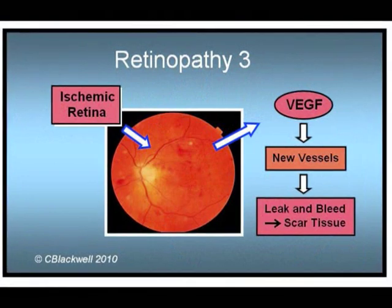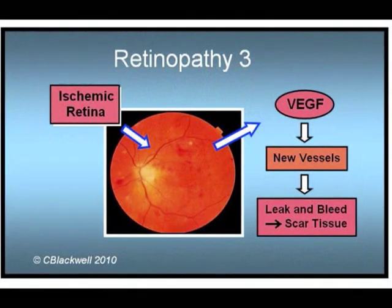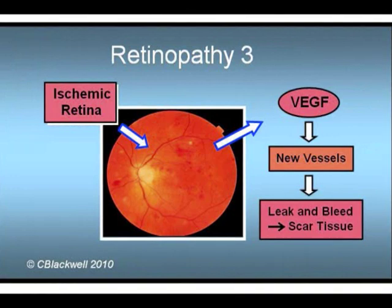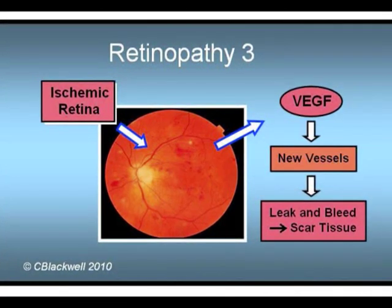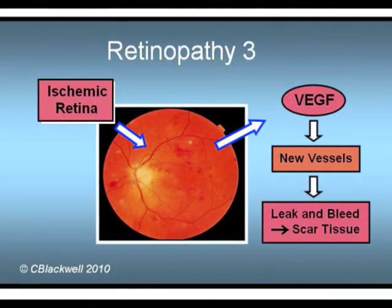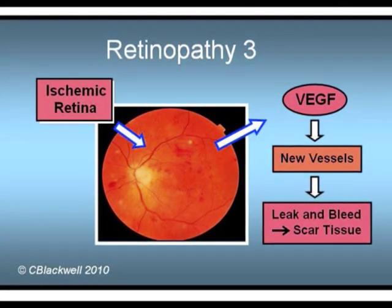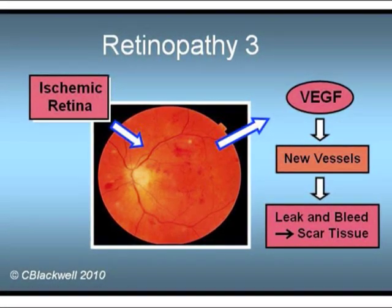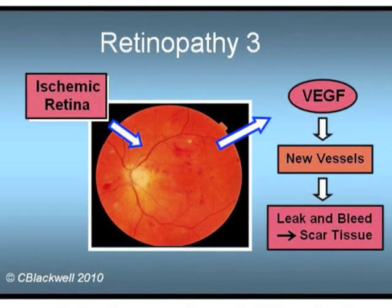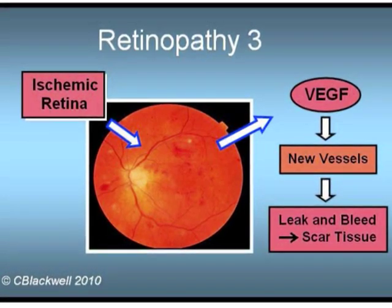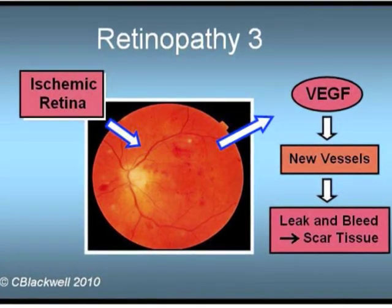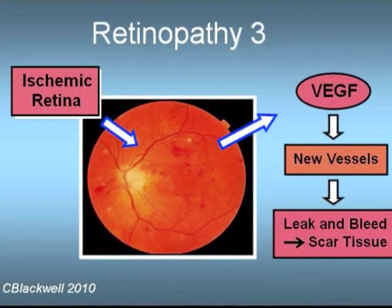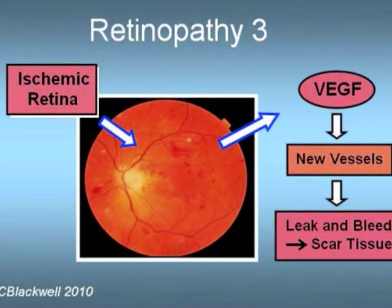Retinopathy becomes more ominous when it reaches the proliferative stage. As the cutoff of blood supply becomes more widespread, retinal cells start to secrete a chemical messenger — vascular endothelial growth factor, or VEGF — that stimulates growth of new blood vessels. This sounds like a good idea, but is actually bad. The new vessels are defective; they have a strong tendency to leak and bleed, which obscures vision and brings in scar tissue.